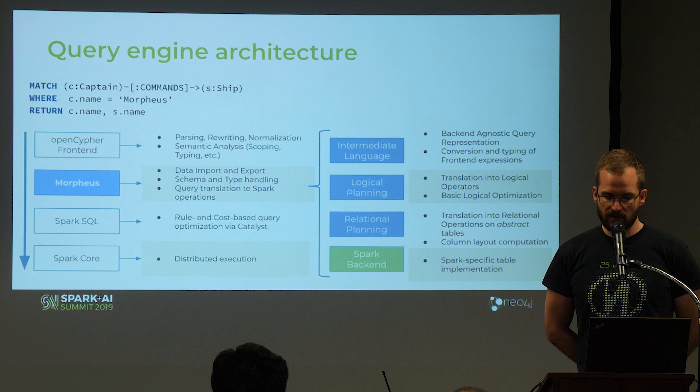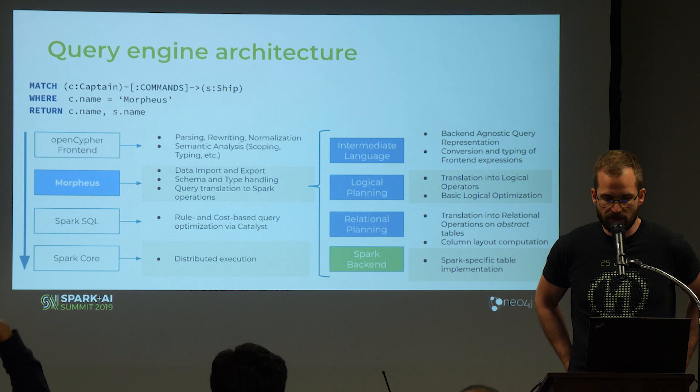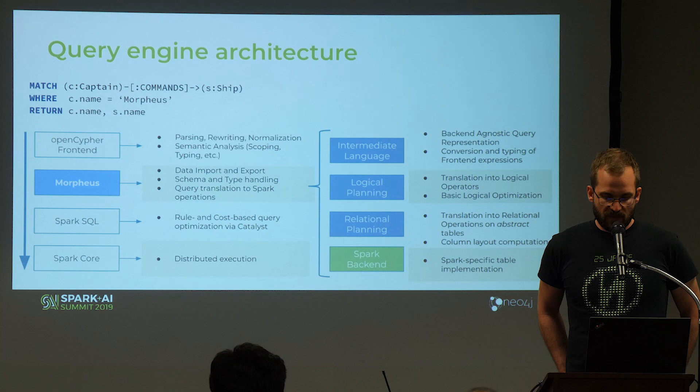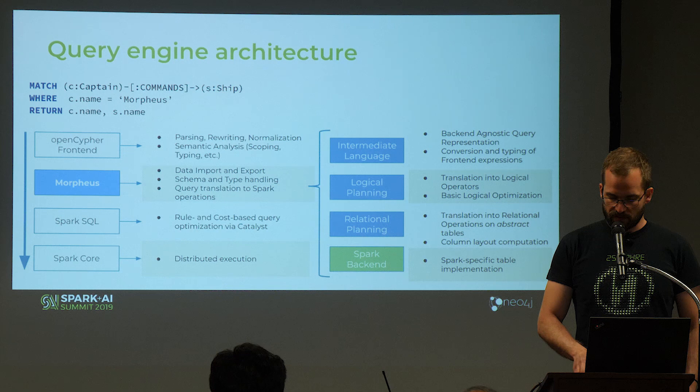These relational operations are executed on an abstract table with relational operations. The Spark backend implements this abstract table with data frames. Other backends are also possible — we have one for Apache Flink and one for Scala collections to run locally. For the Spark case, we take this data frame implementation of our query and hand it over to Spark SQL, where Catalyst is responsible for cost-based or rule-based query optimization, and then Spark Core executes the query in a distributed way.